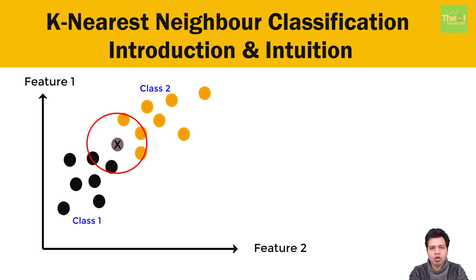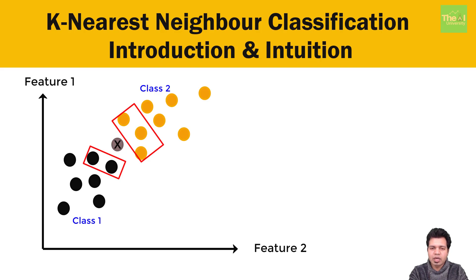In step 3 we count the number of data points falling in each class from the given five neighbors. In our case, the black class has two neighbors and the orange class has three neighbors. Moving to step 4, since the orange class has more neighbors we assign data point x to the orange class. This is the way data points get classified using the KNN algorithm — isn't it easy enough? Indeed it is.